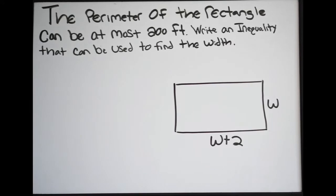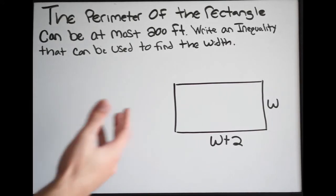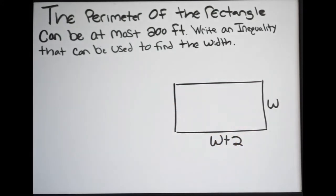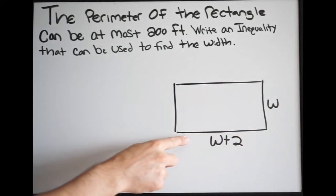We're given a picture here of a rectangle. We know that this side is going to be w, and this is going to be w plus 2. We want to create an inequality to represent what's going on here. We can actually solve for w, which is going to be our width.